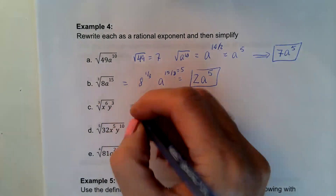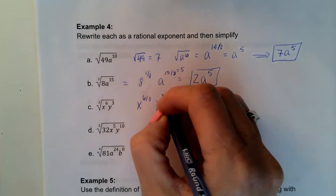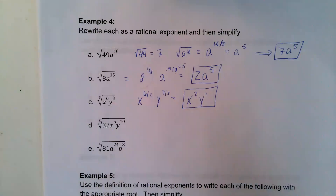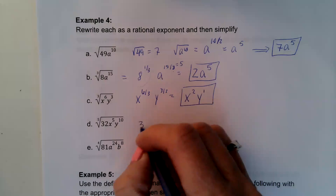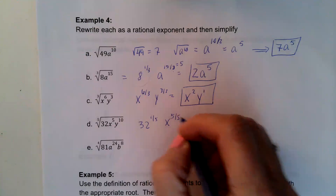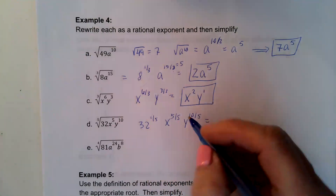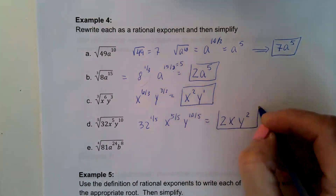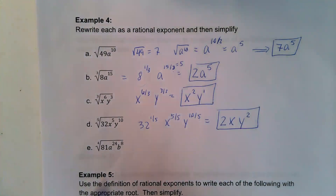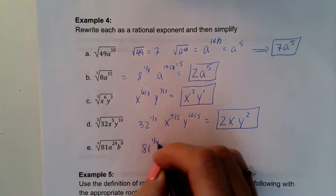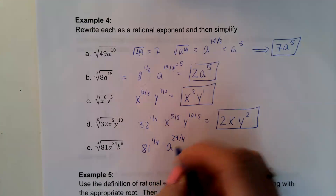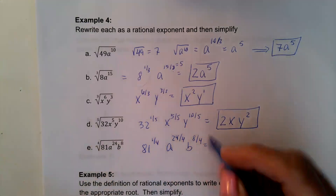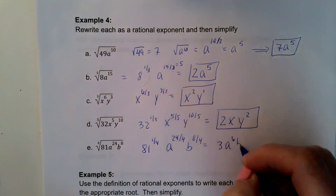The next one is a cube root, giving x to the 6/3 times y to the 3/3, which simplifies to x squared times y. The next is a fifth root: 32 to the 1/5 times x to the 5/5 times y to the 10/5. The fifth root of 32 is 2, x to the 5/5 is just x, and y to the 10/5 is y squared — result: 2xy squared. Then a fourth root: 81 to the 1/4 times a to the 24/4 times b to the 8/4, which gives 3 times a to the 6th times b squared.